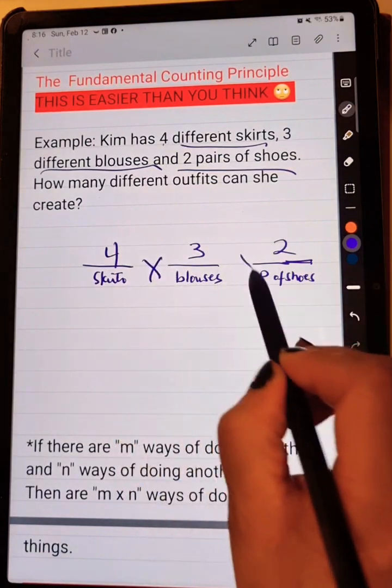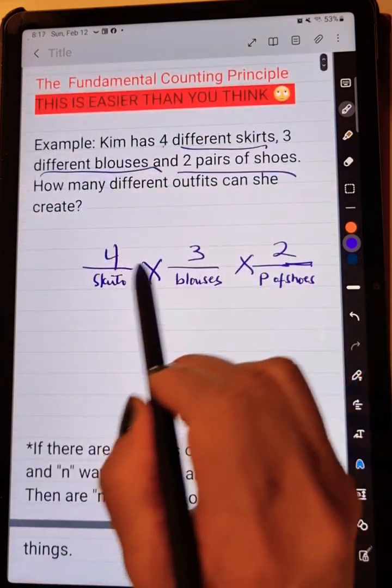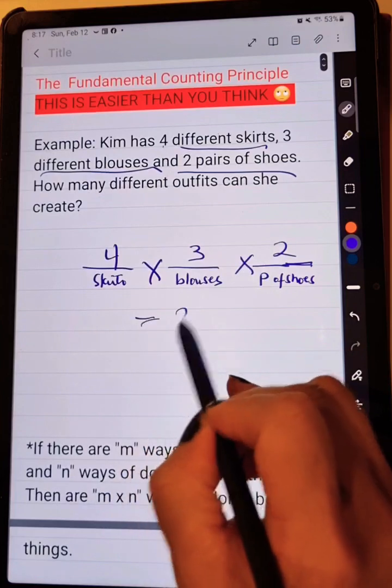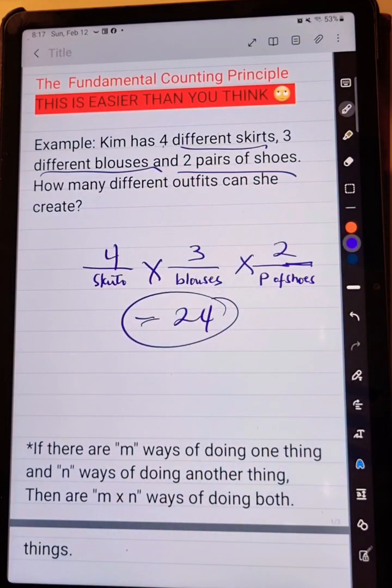Now, what I'm going to do is simply, you're just going to multiply that. Four times three is equal to twelve times two, that is equal to twenty-four. So twenty-four different outfits.